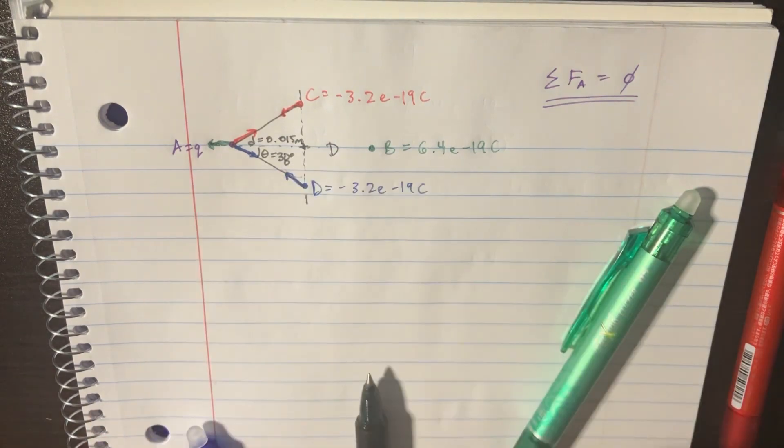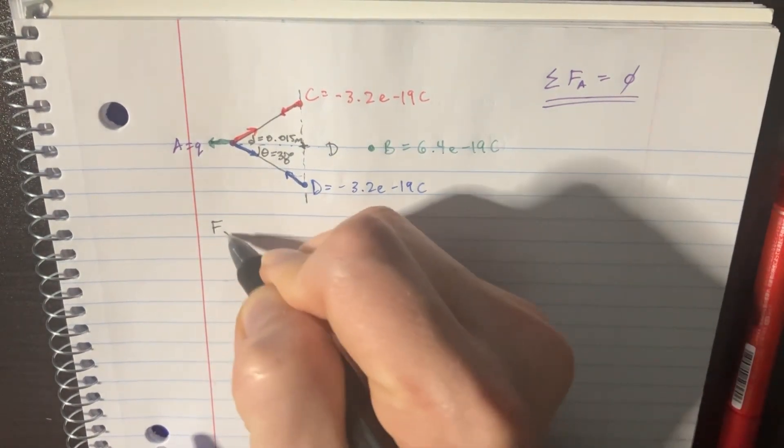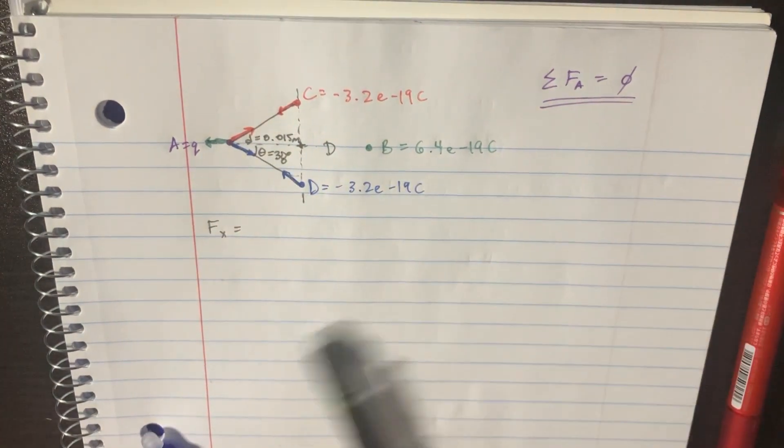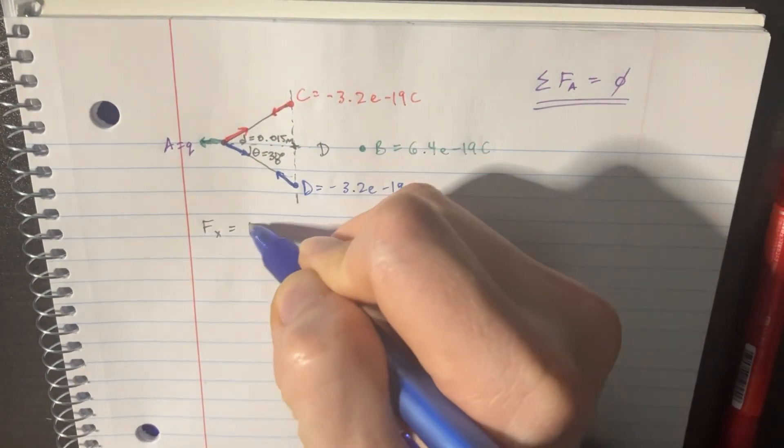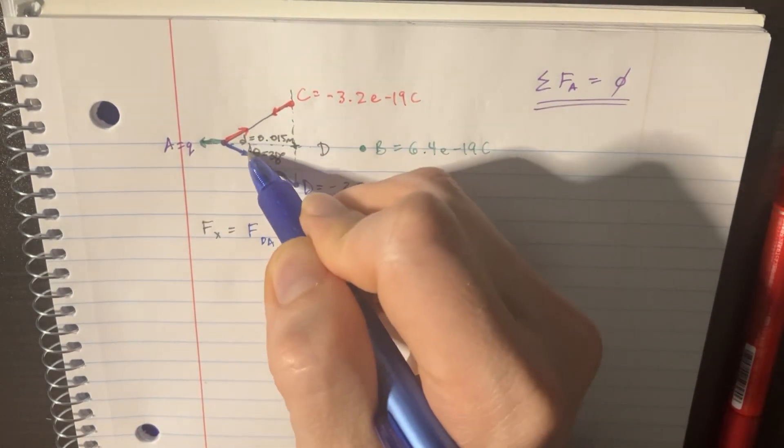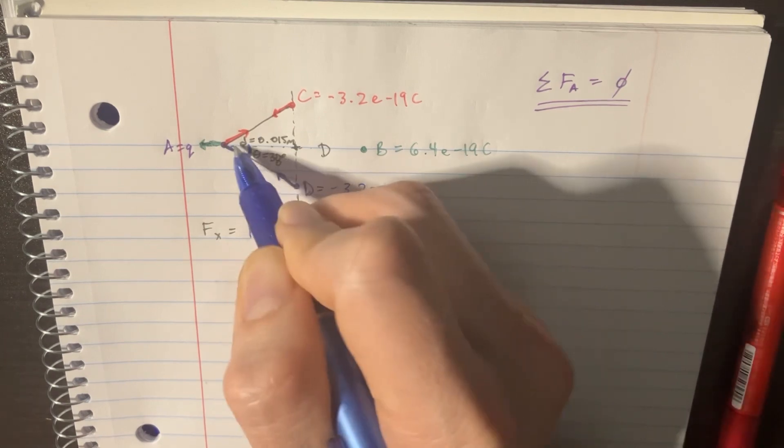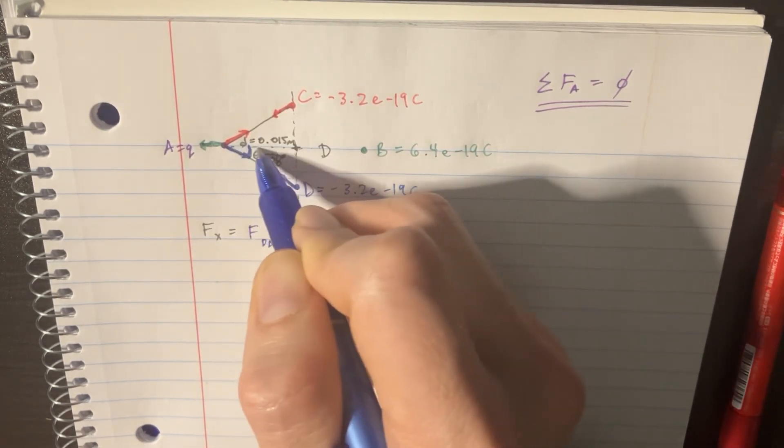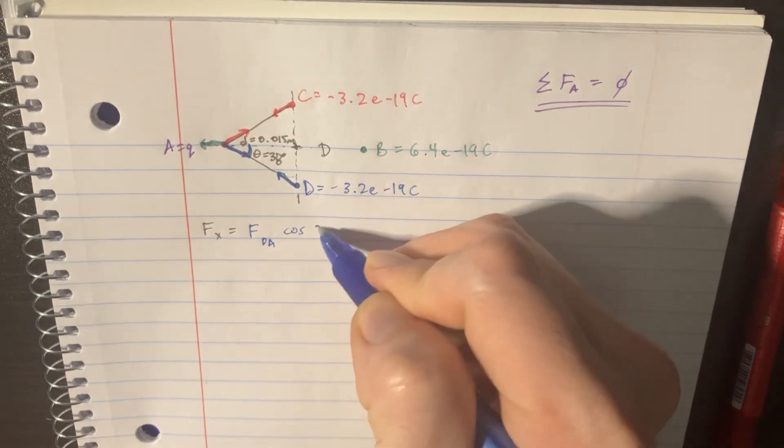So now we've figured out that, all we have to do is figure out what the fx is, which is going to be the force of D on A. But then we also have to figure out what the angle here is, 38 degrees. Because it's an x direction, this is going to be cosine 38 degrees.